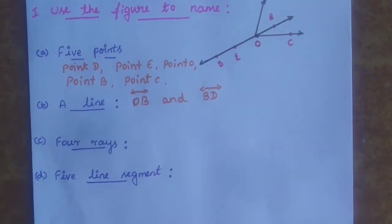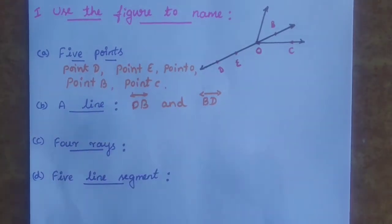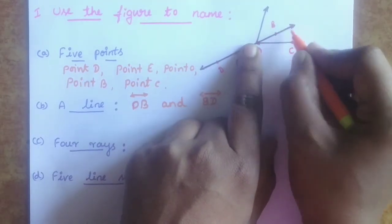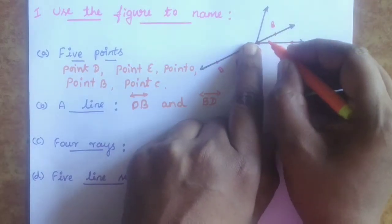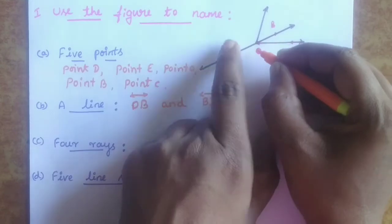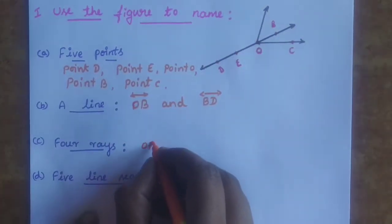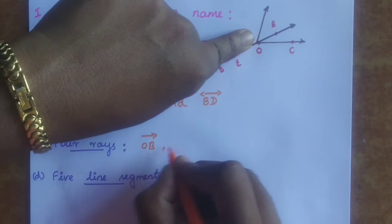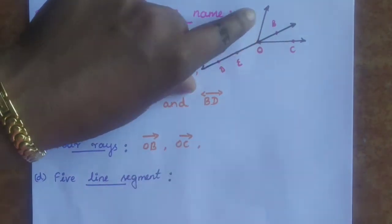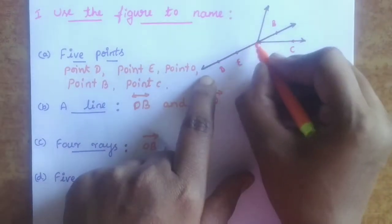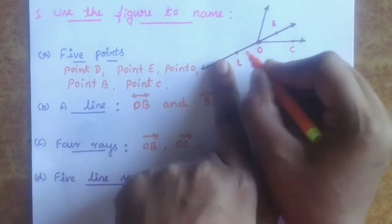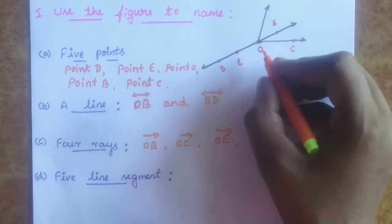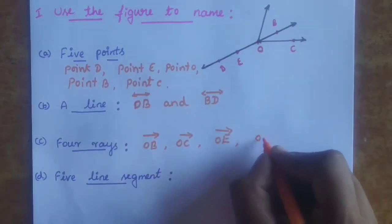The next one: four rays. In this figure there are four rays. A ray extends in one direction. So OB is one ray, OC is another ray, OE is also one ray, and OD is one more ray.